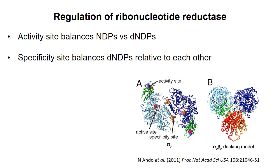Ribonucleotide reductase is quite a fascinating enzyme in its regulation. There are different classes in the enzyme family, but the one we're going to look at contains two alpha subunits and two beta subunits in its active form. The alpha subunits contain the active sites, while the beta subunits contain a metal binding site that is required for the reaction to take place.